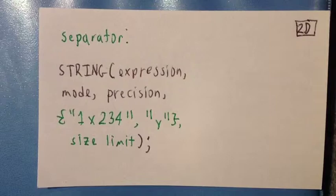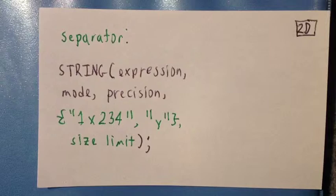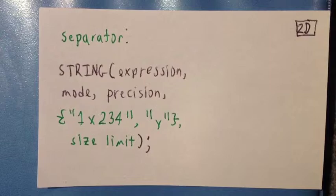If you want to dictate the characters of the separators, you're going to need two additional arguments. The first additional argument is a list of two strings. The second argument is going to be the pixel size limit.